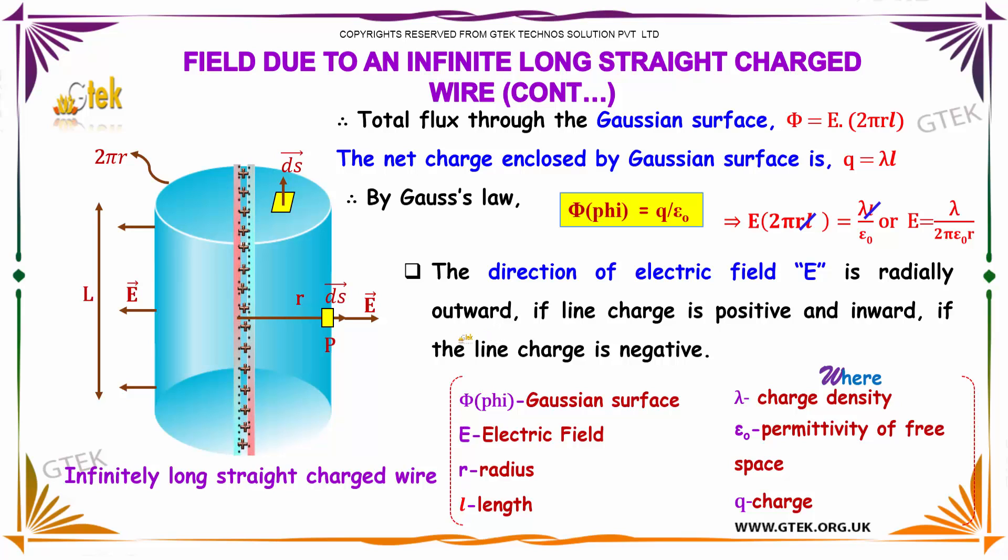The direction of the electric field E is radially outward if the line charge is positive, and inward if the line charge is negative.